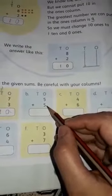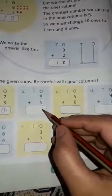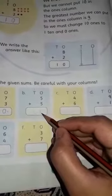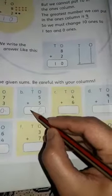5 plus 5 is equal to 10. But we cannot write 10 in ones column. So we will write 0 in ones column and 1 in tens column.